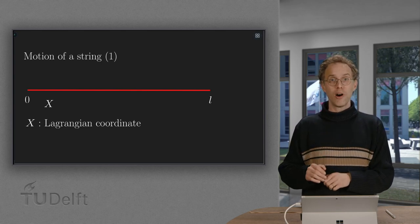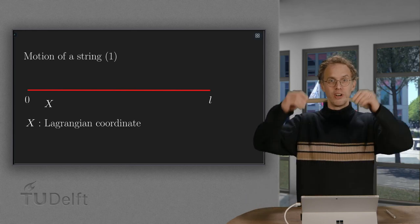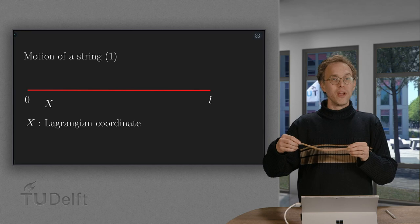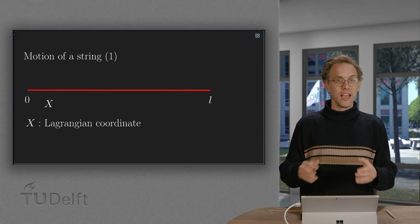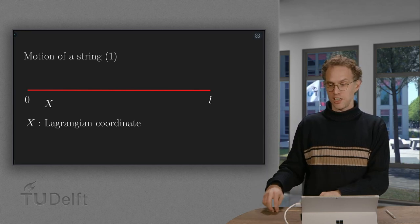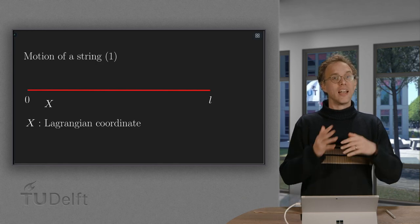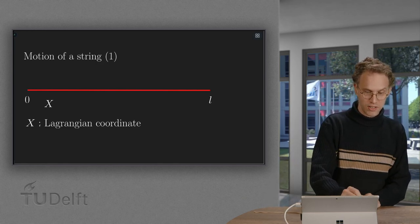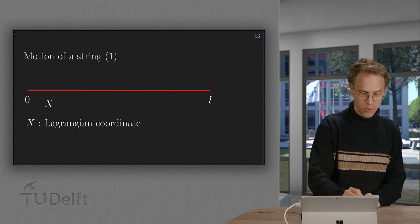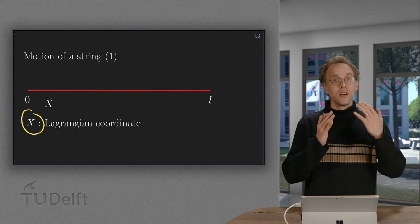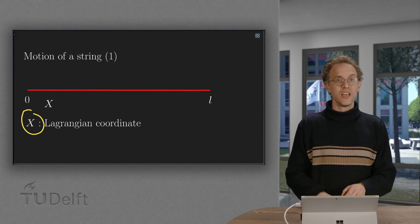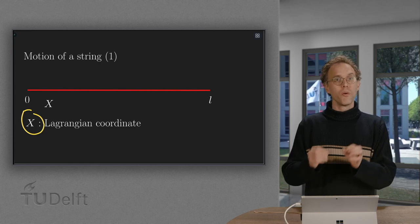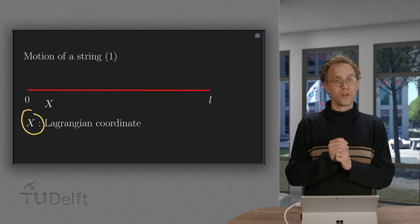So first, how are we going to describe our string? We describe it in some standard position, say it's just lying. And then we describe it by the variable capital X, which is the so-called Lagrangian coordinate. This capital X describes a string which is just lying there, and all parts of the string have their own capital X.